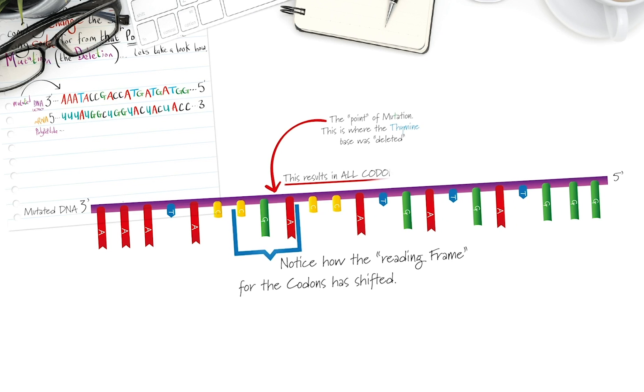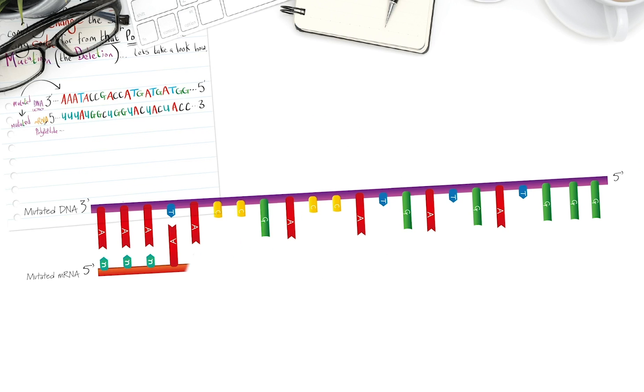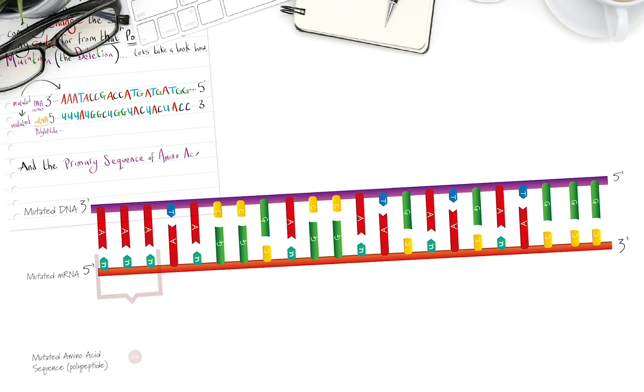This results in all codons downstream of the point of mutation being altered. And now our mutated messenger RNA sequence reads as follows. And the primary sequence of amino acids, our polypeptide chain, is quite different.